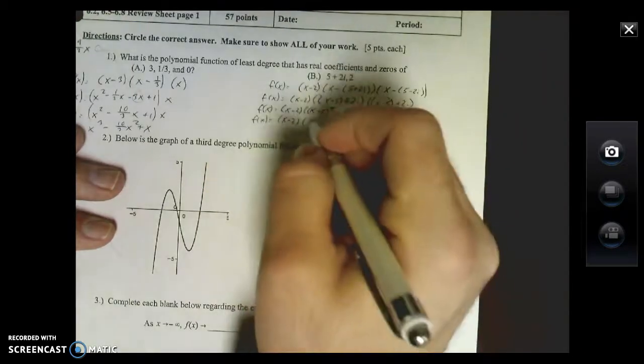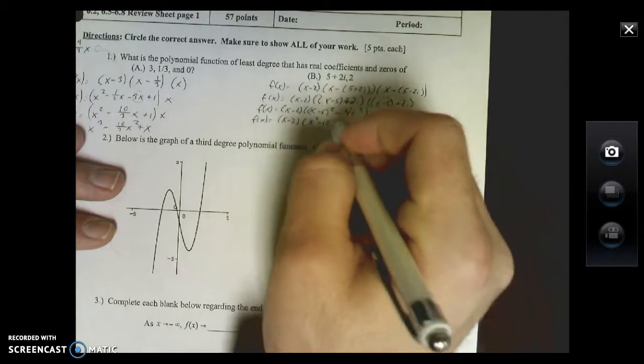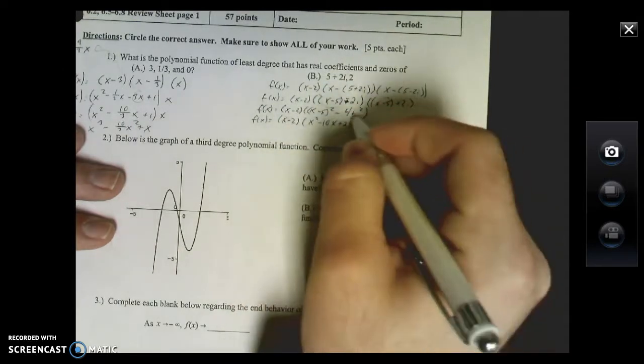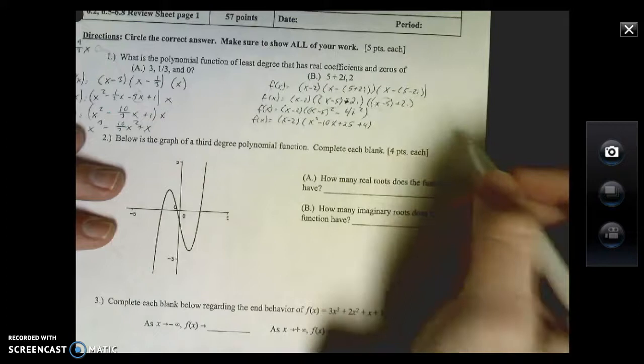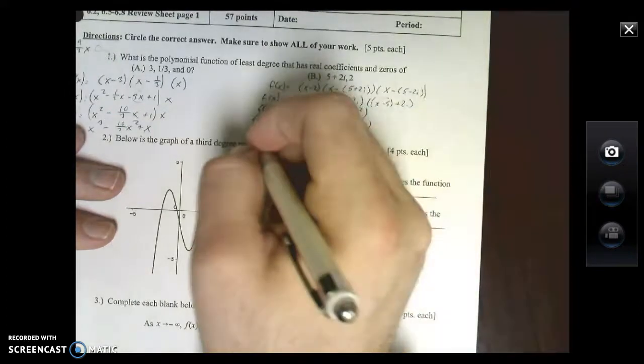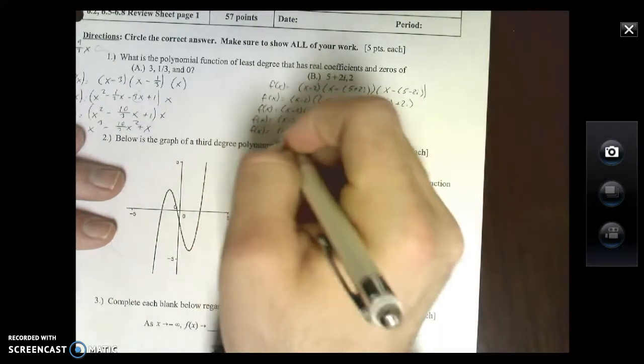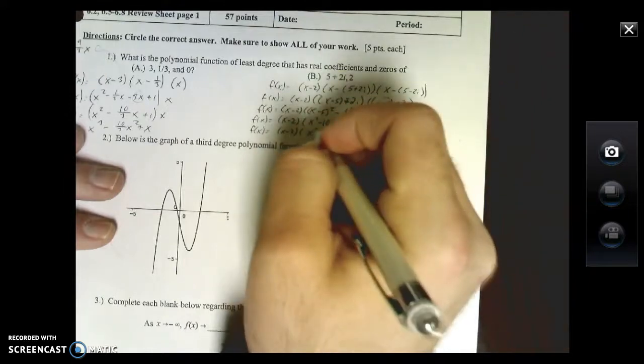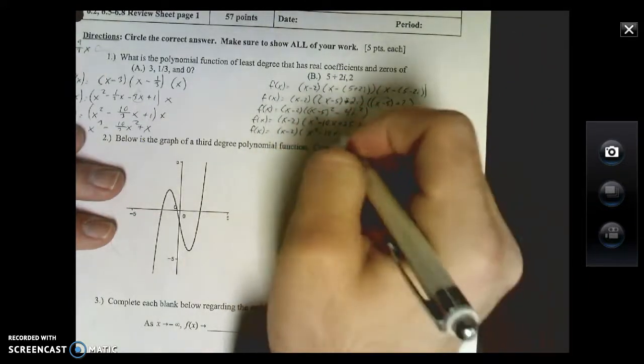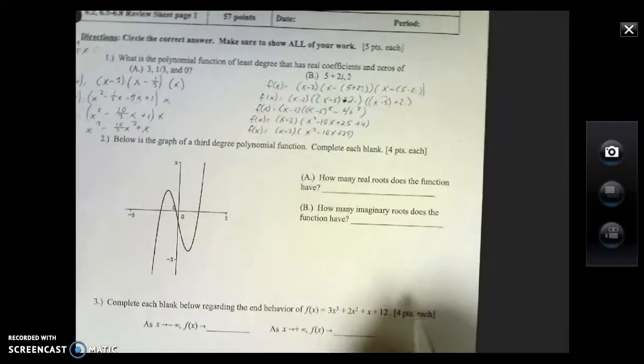I can foil this out: I get X squared minus 10X plus 25. This turns into plus 4, so X squared minus 10X plus 29.